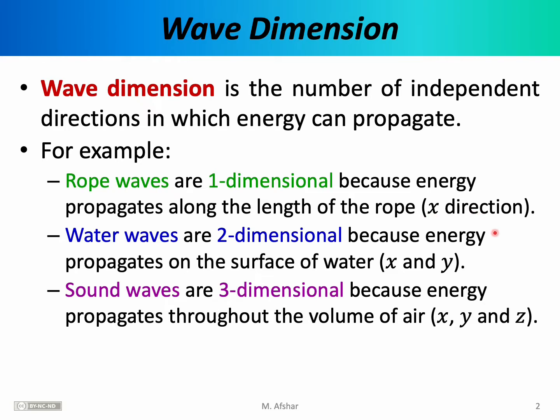If you've ever noticed ripples on the surface of water, you'll notice that water waves in general are two dimensional, because the energy propagates on the surface of the water in two directions — we can call those the x and the y directions. For example, if you drop a pebble onto the calm surface of a pool of water, you'll notice that the waves can travel in the x direction — positive x and negative x — but simultaneously in the y direction or along a diagonal direction. So we would say that water waves, which are confined to the surface of water, are two dimensional waves.